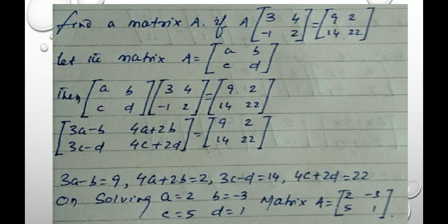Multiplying the first two matrices, that is 3 into A, that is 3A minus B, then 4A plus 2B, then 3C minus D, 4C plus 2D, that is equal to 9, 2, 14, 22. From here, we get 4 equations. There are 3A minus B equal to 9, 4A plus 2B equal to 2, 3C minus D equal to 14, 4C plus 2D equal to 22.